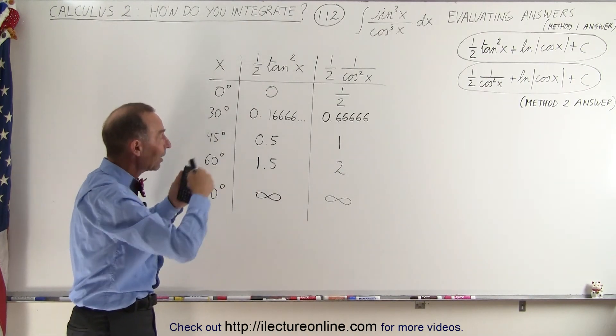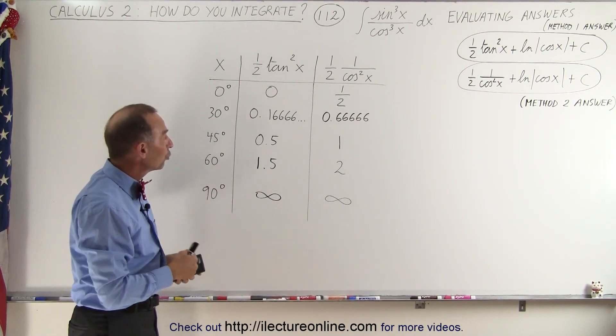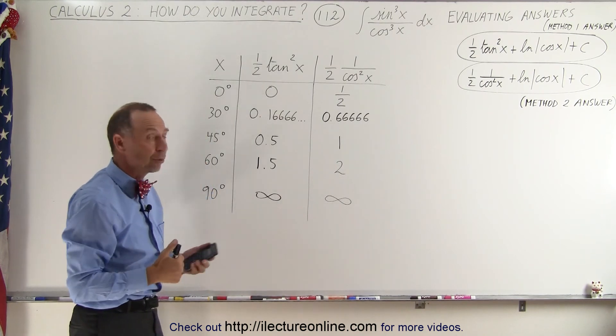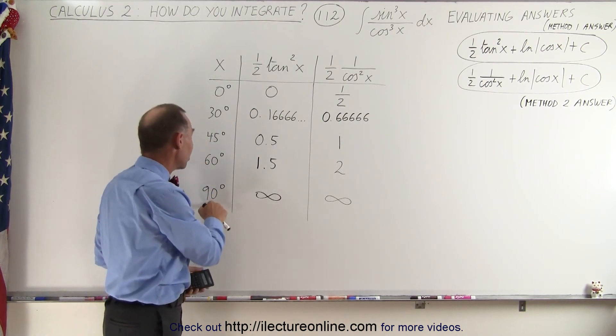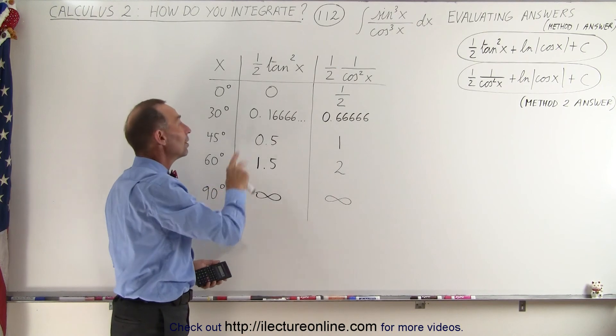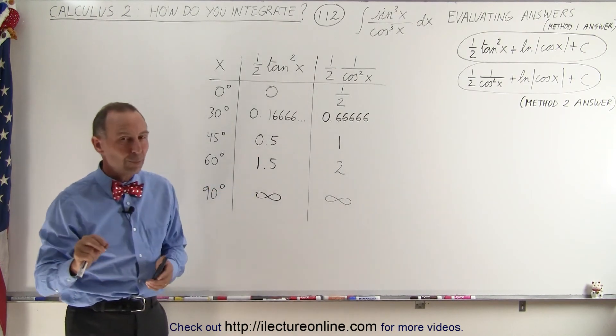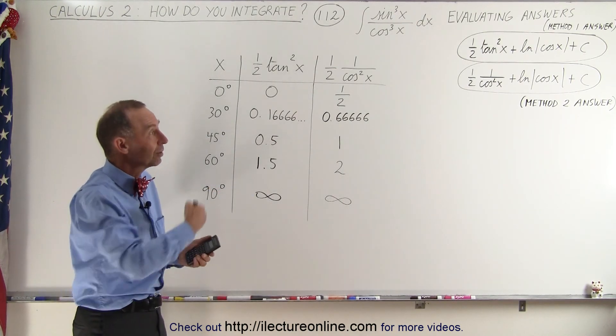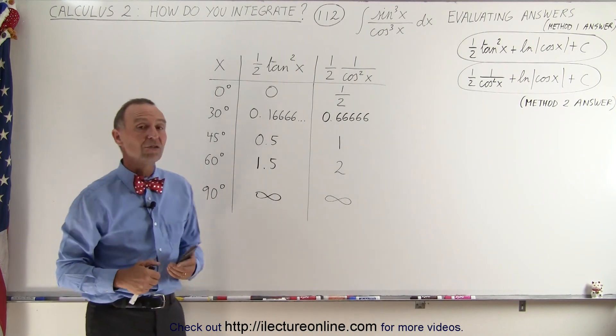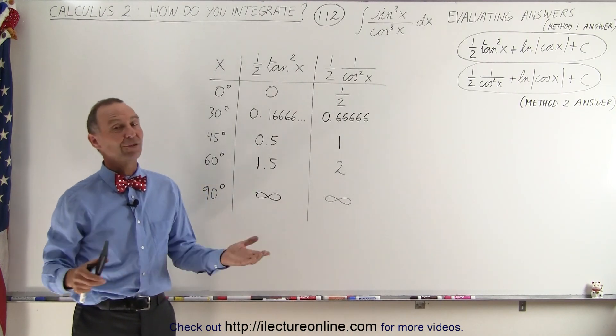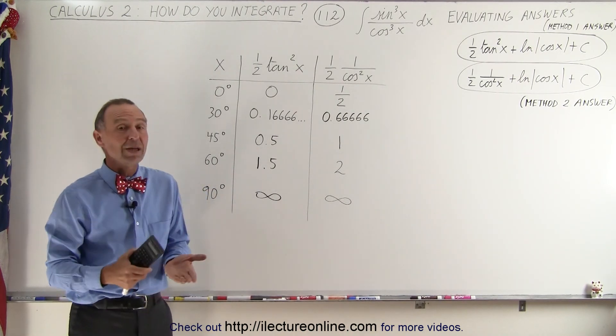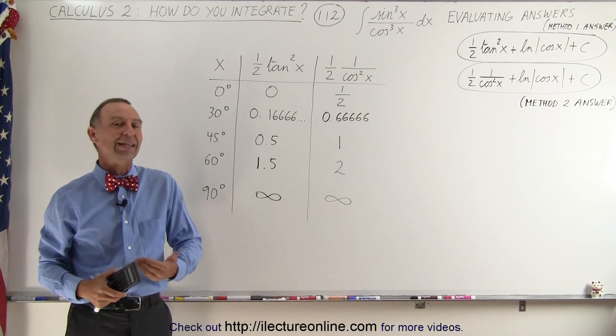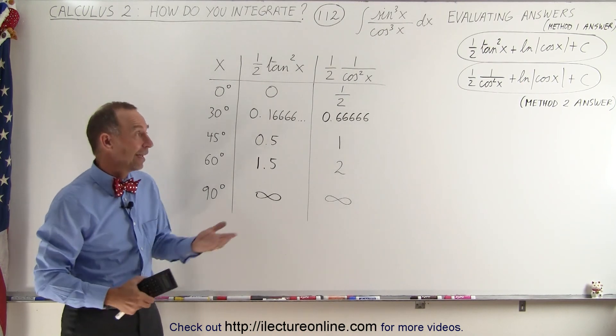But at least you saw that the pattern holds true for any value that we try, and I would assume that for any value smaller than 90 degrees, between 0 and 90 degrees, the answers will be exactly 0.5 apart, which means we can take care of that by just the constant of integration. And so the two answers we got using the two methods are equivalent in that they give us the same result. And that's how we know.